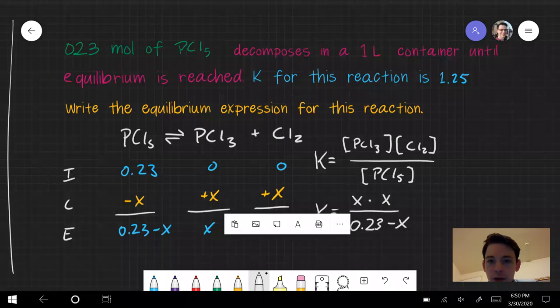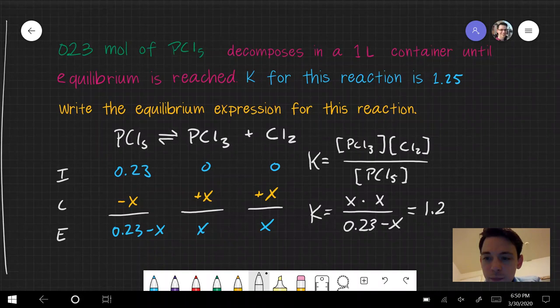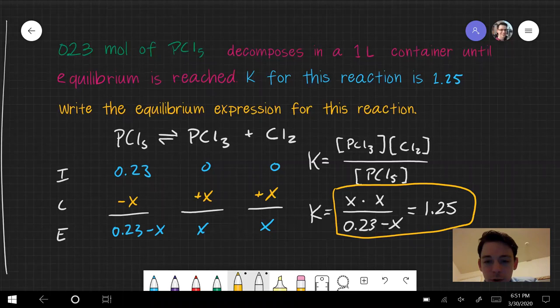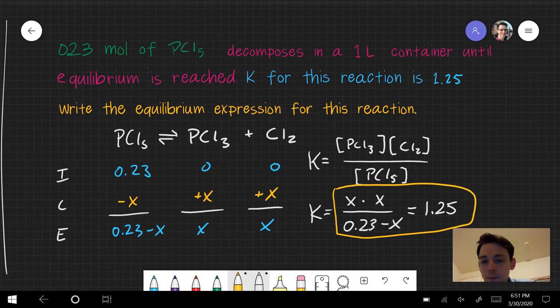One last thing, this problem does tell me the actual value for K. It says that it is 1.25. So here I have an expression that has just one variable that I could potentially solve for. The numerator, x times x, could be rewritten as x squared. And this is a quadratic equation, so we would have to use the quadratic formula to solve for it, or more conveniently, if you've got a graphing calculator, learn to use the solve function.